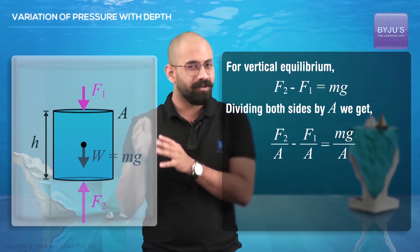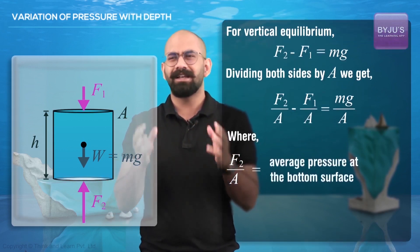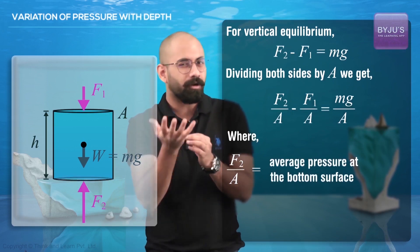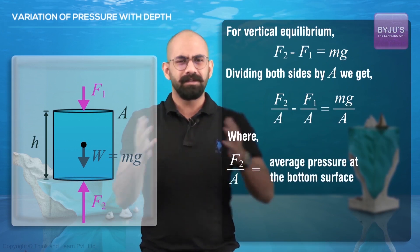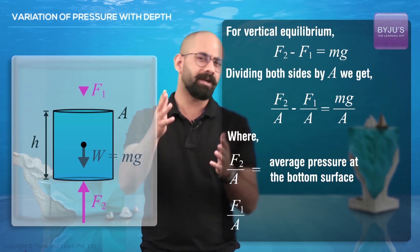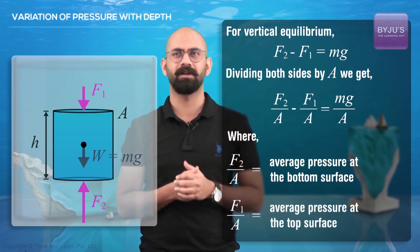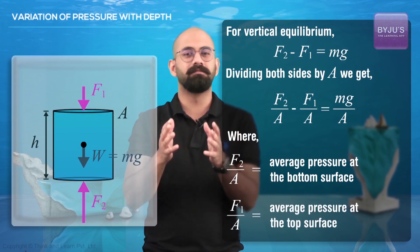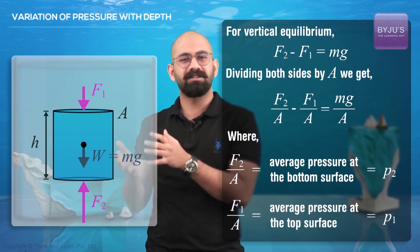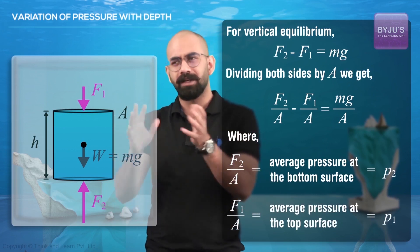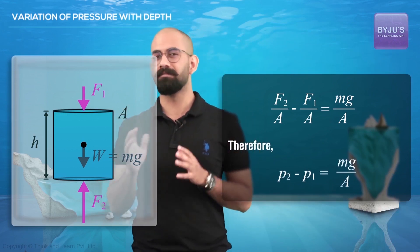From our definition, F2/A is basically the average pressure that the bottom surface is feeling, and similarly F1/A is the average pressure that the top surface is feeling. So if I call them P2 and P1, the equation becomes P2 minus P1 equals MG/A.